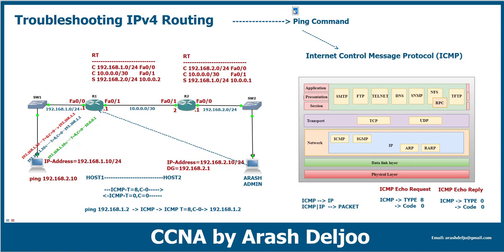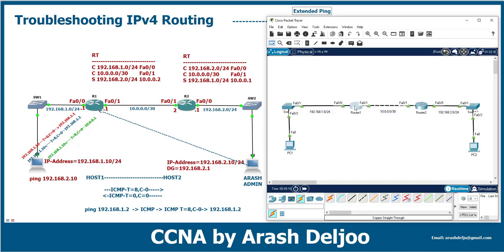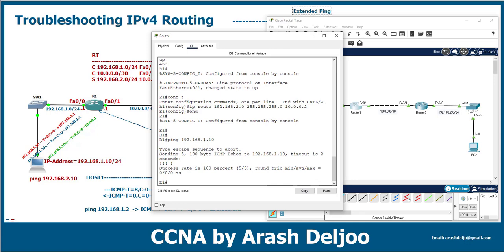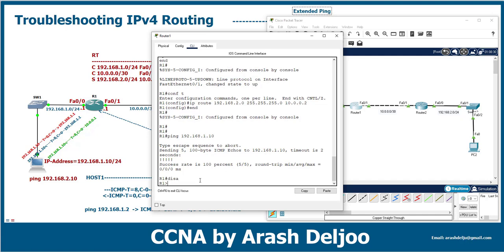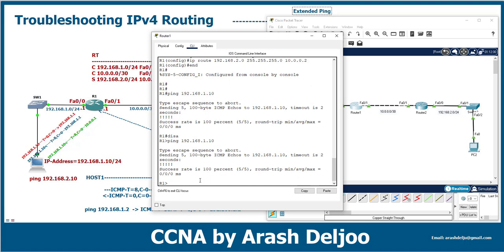With extended ping, you can modify the features of the ping. Let me show you on Router 1. We already have connectivity with normal ping. The standard ping can be used from both user mode and privilege mode — for example, ping 192.168.1.10 works in both modes.